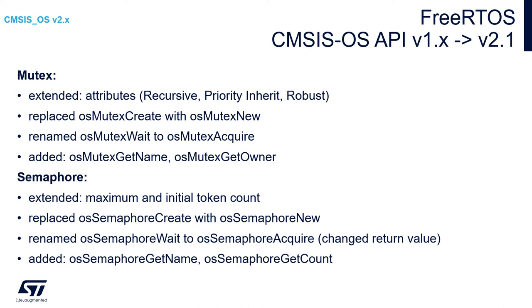Concerning semaphores, there is an extended maximum initial token count. Instead of the create function, we are using new — OS semaphore new instead of OS semaphore create. There is a rename from OS semaphore wait to OS semaphore acquire and a change of return value. New API functions OS semaphore get name and OS semaphore get count have been added for counting semaphores.